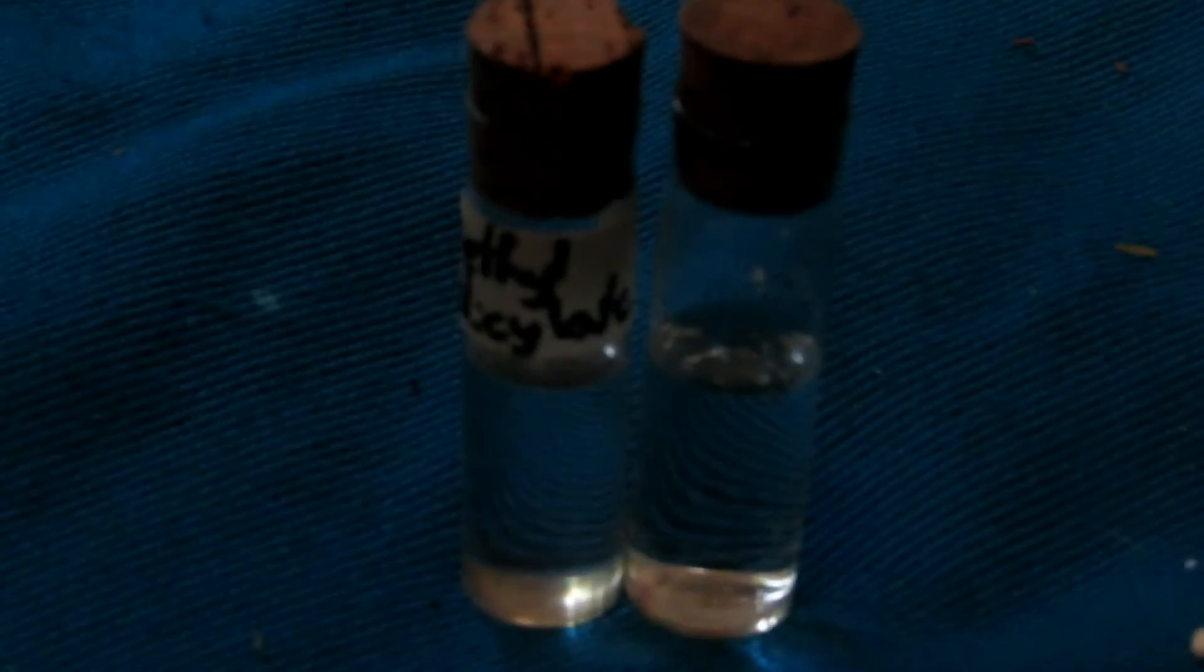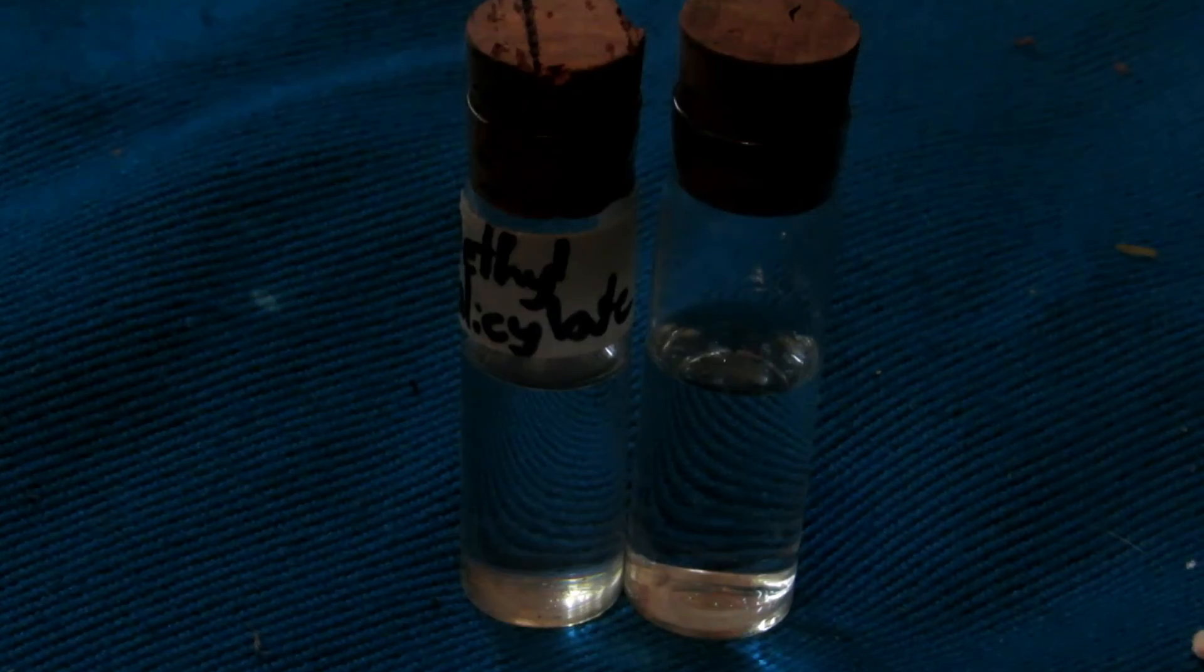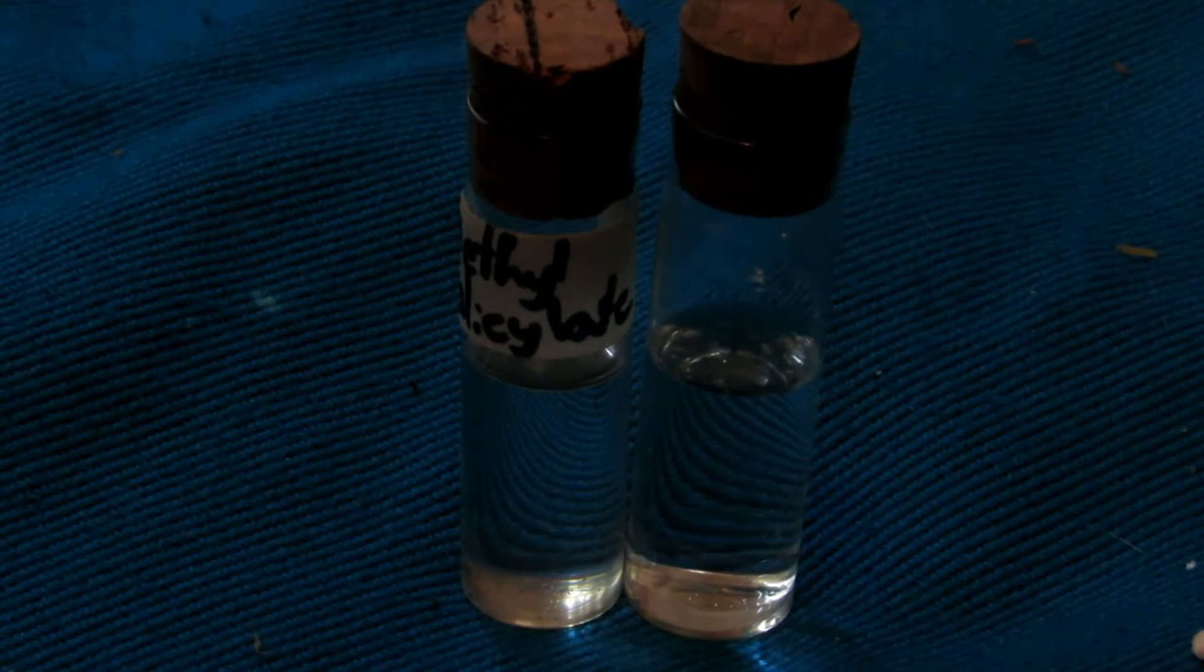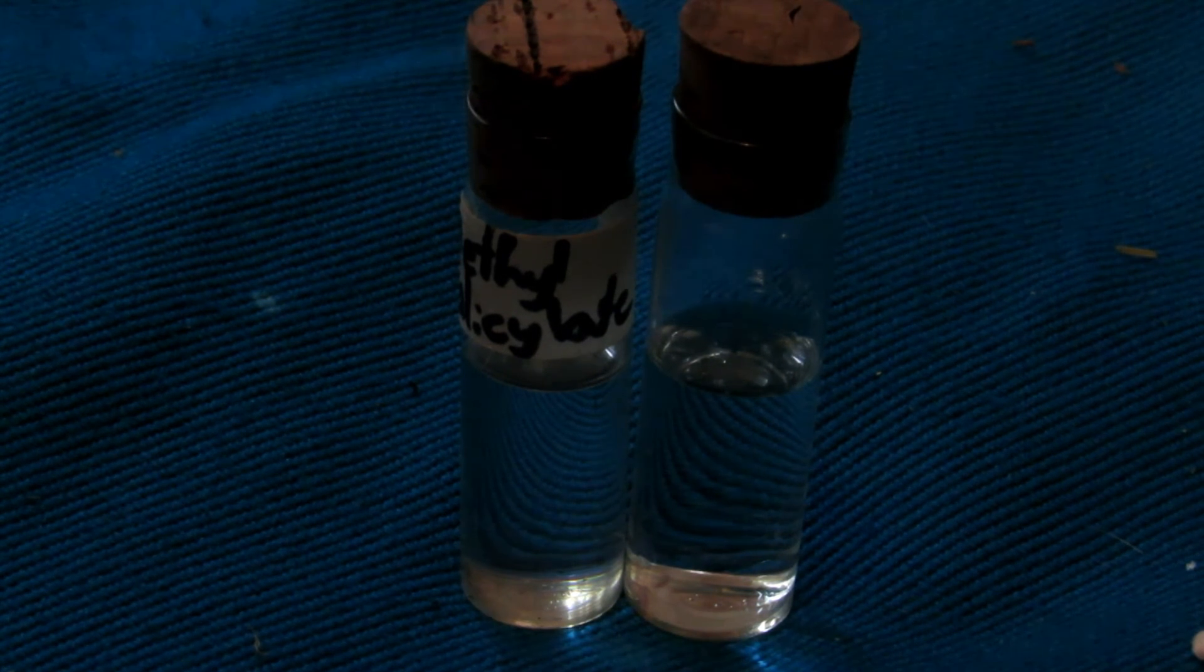That's basically how to make methyl salicylate from salicylic acid, methanol, and sulfuric acid as a catalyst. Remember, methyl salicylate is quite toxic—as little as 5 milliliters can kill a full-grown adult. Don't ingest it, but it smells nice, with an almost minty odor that's not typical mint.